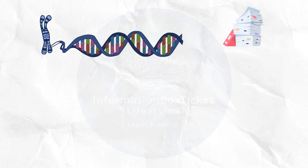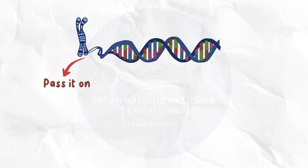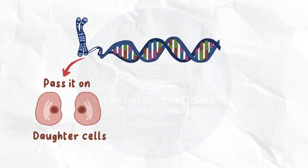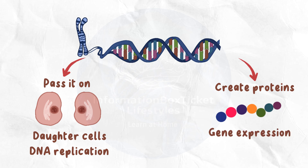The objective of DNA is to store information, pass it on to daughter cells, and use this information to make proteins. This requires two crucial processes: DNA replication and gene expression.